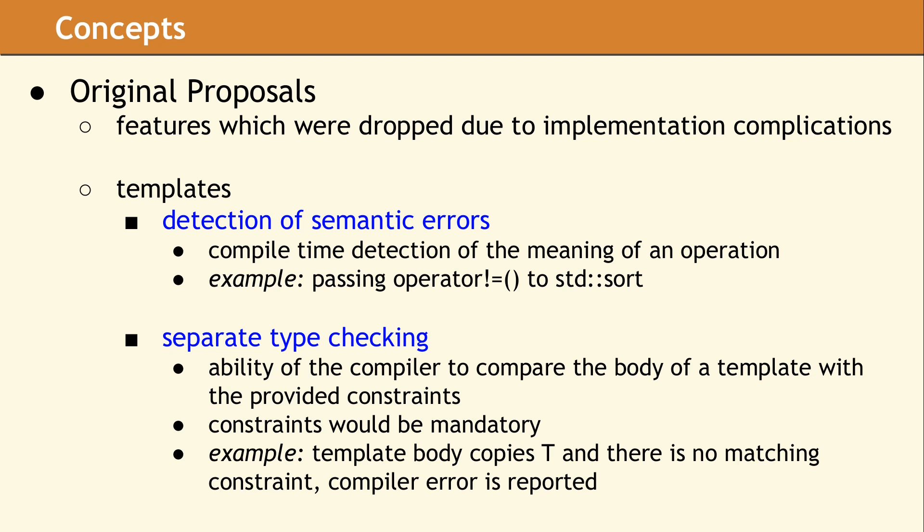The first component they eliminated was the detection of semantic errors. What we have now can verify the properties of a data type agree with the constraint. However, they cannot check any further. As an example, the third parameter to std::sort must be a function which accepts two elements and returns a boolean value. C++20 concepts can verify the function's signature. But std::sort requires this callback to implement a less than operation. How do you verify that? If you pass a not equals operator, the signature is correct, but the behavior is different and in fact undefined. This is a semantic error and cannot be detected by the current implementation of concepts.